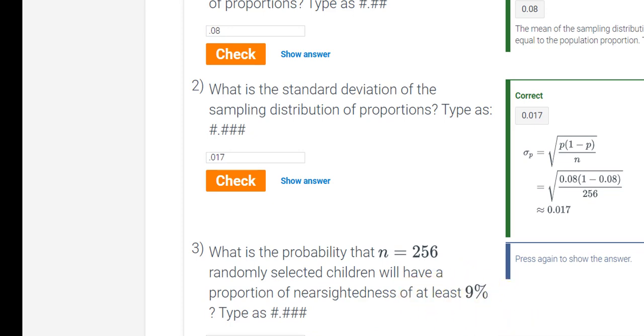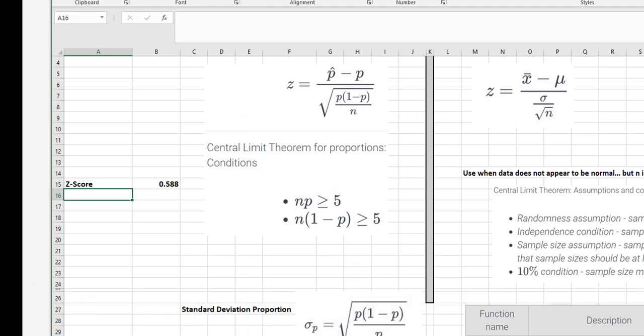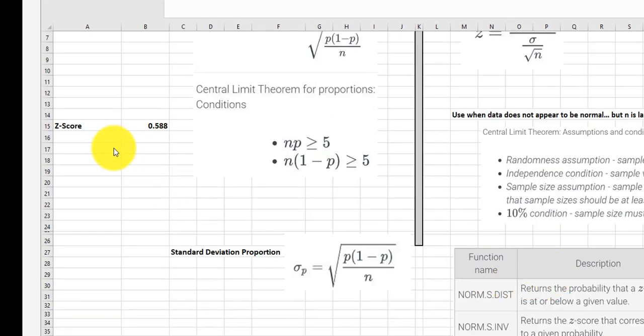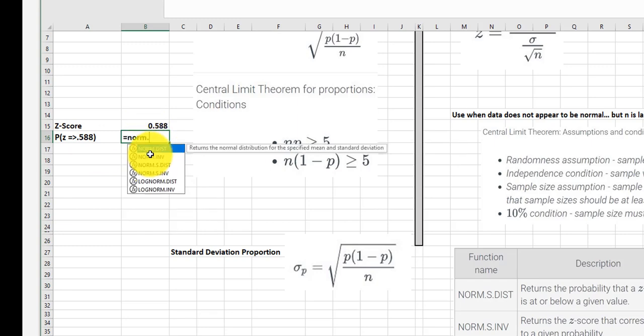Okay, so we have an Excel function for that as well, so I'm going to type in. So we want that to find the probability that this is going to be equal to or greater than. So here's my z-score, I'm going to type in equals norm.s.dist. Because that's going to return the probability that a z-score is at or below a given value, but we need greater than, so we're going to talk about that in a minute.